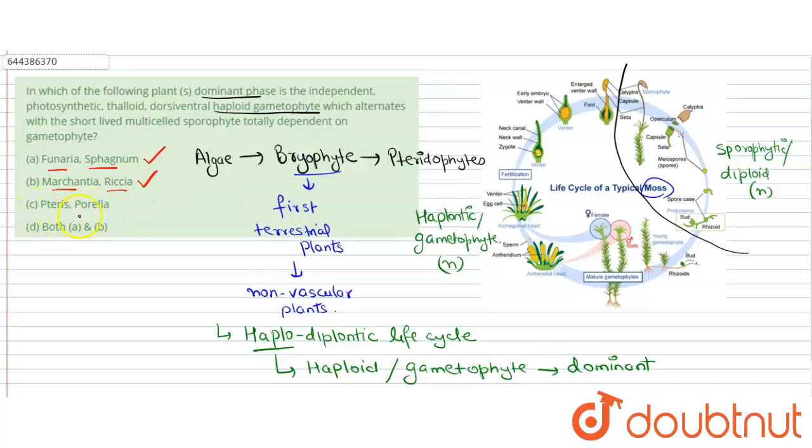Then C says Pteris and Porella. So Porella is an example of bryophyte, but Pteris belongs to pteridophyte. So C could not be our answer, and D says both A and B. So this is our most appropriate answer.